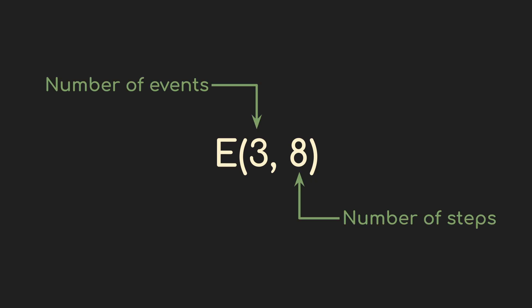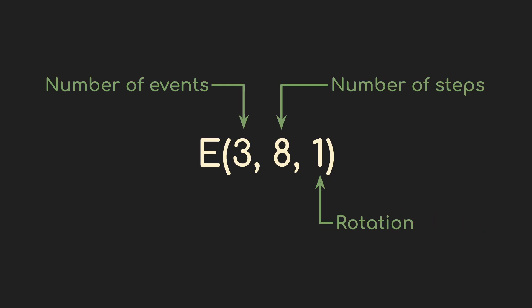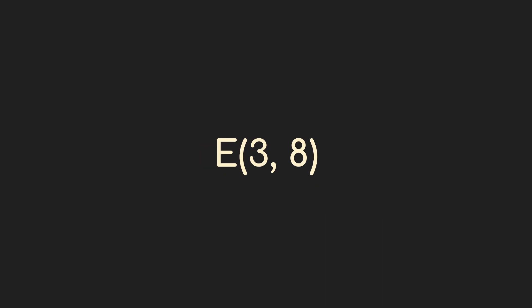In Toussaint's paper he used a little code of the format E(n,k) to describe a particular Euclidean rhythm — it's just shorthand for, say, three events over eight steps. But that leaves rotation out, so I'm going to take it one step further and write it as E(3,8,1), which we can interpret as three events over eight steps rotated by one.